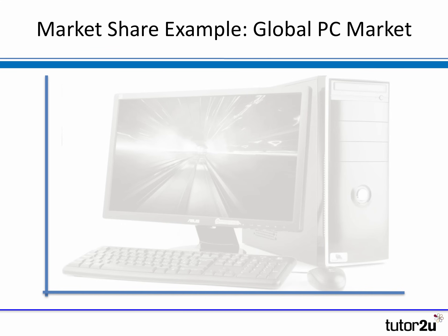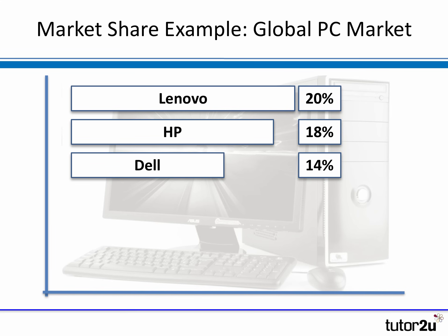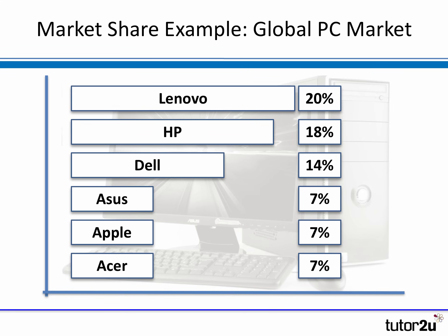Let's look at a couple of examples to illustrate what we mean by this percentage. First, let's think about the global market for the shipment of personal computers. Who has the largest market share? The market has changed dramatically over recent years and now the largest manufacturer and seller of PCs globally is Lenovo, a Chinese-based firm who had 20% of the global market in 2015. HP is almost as large at 18%, Dell at 14%, and then Asus, Apple, and Acer each have 7% of the global market.